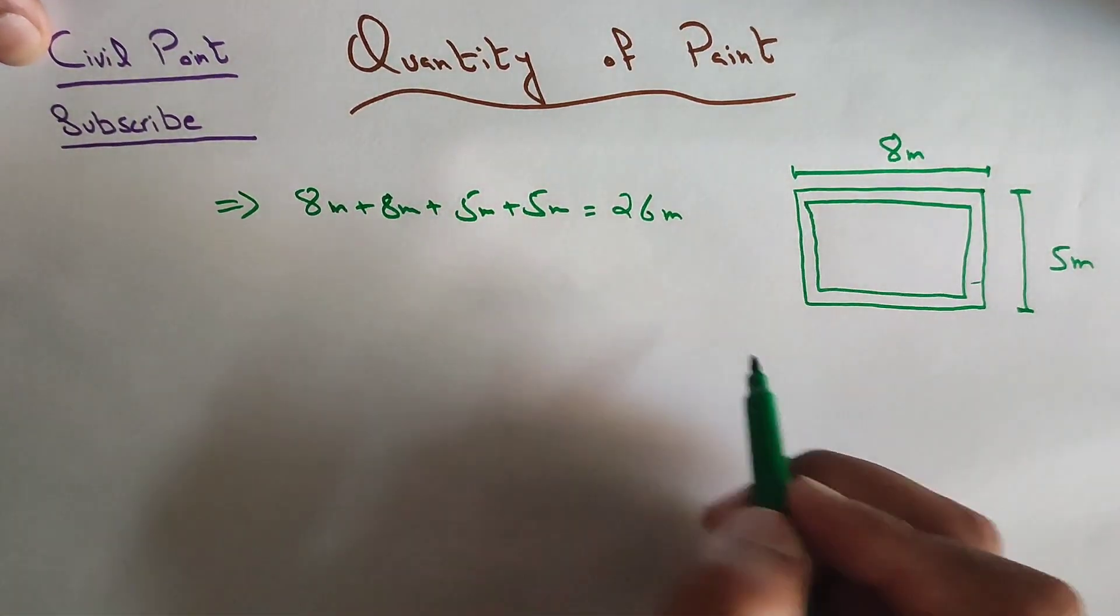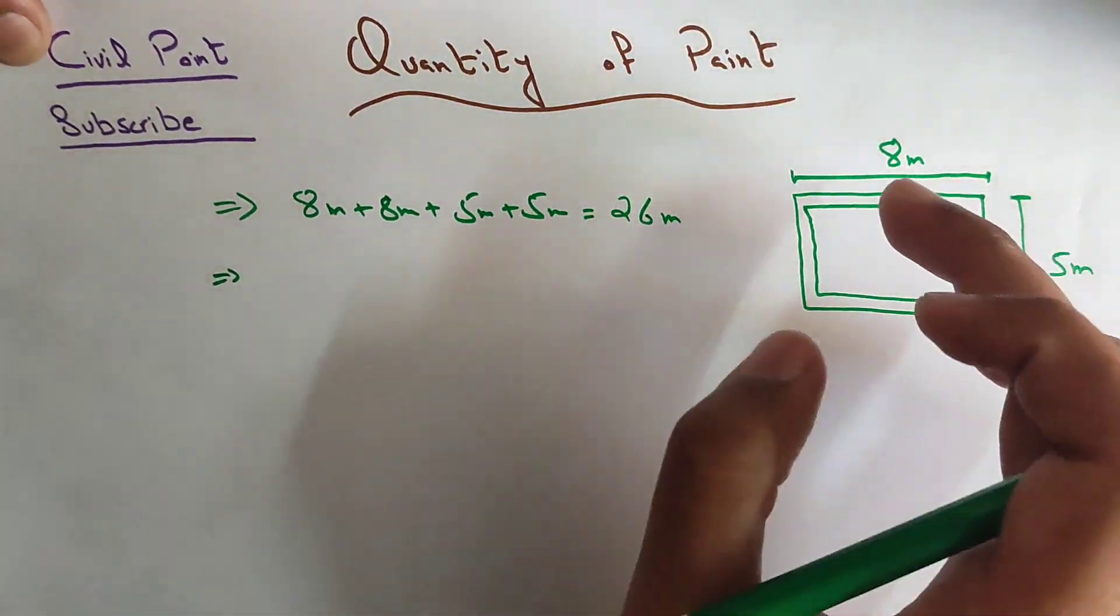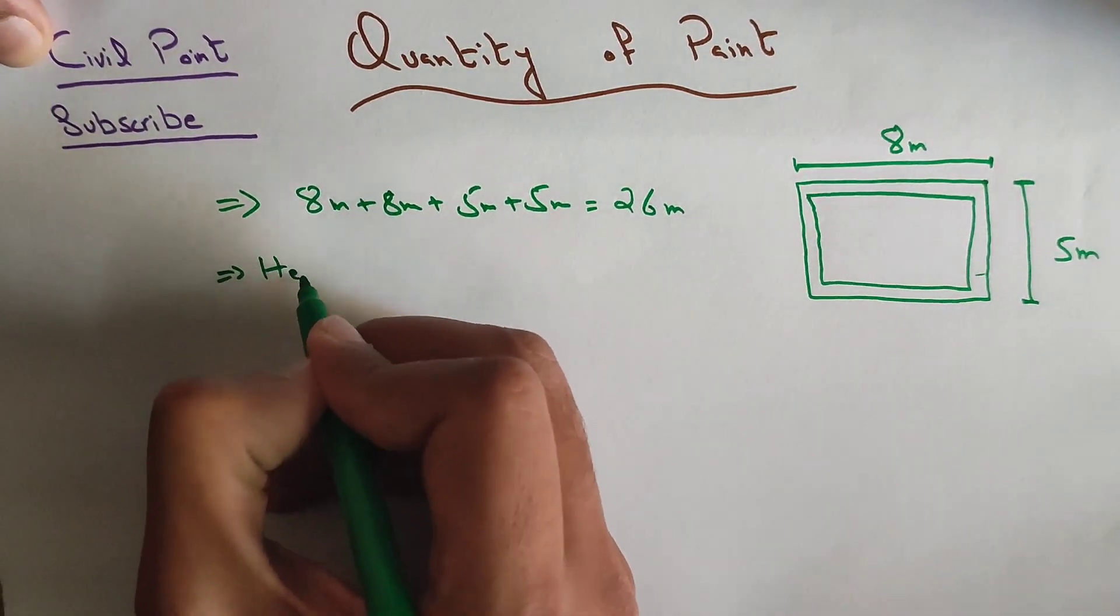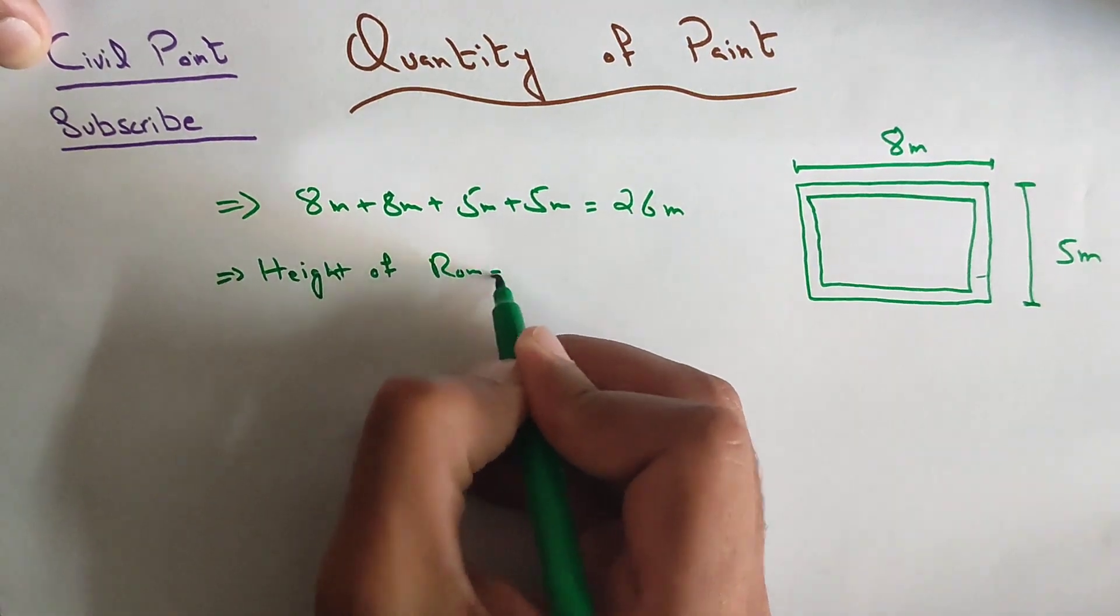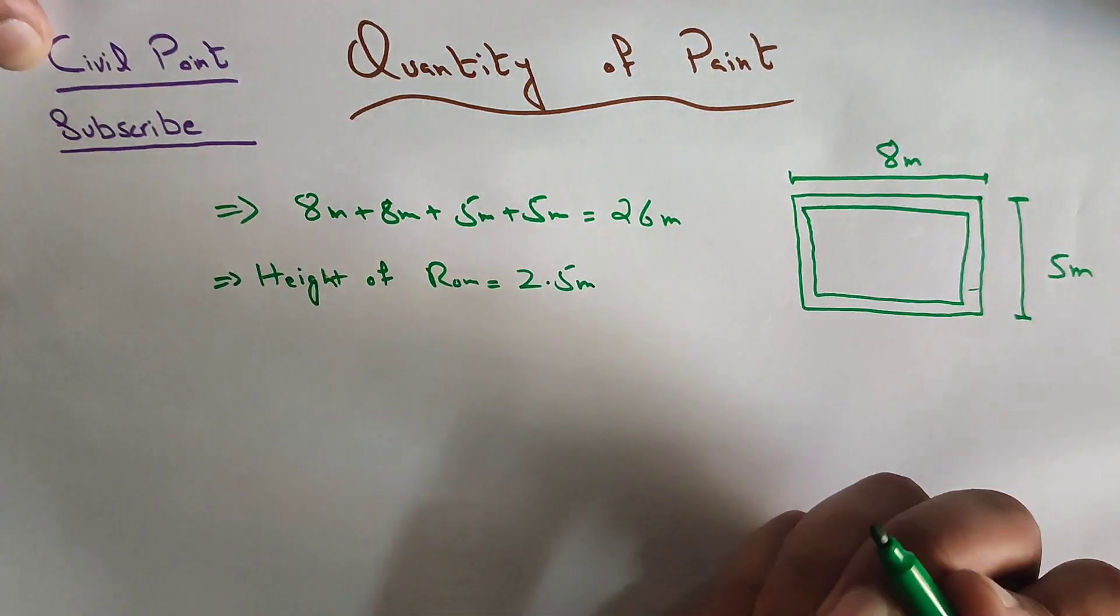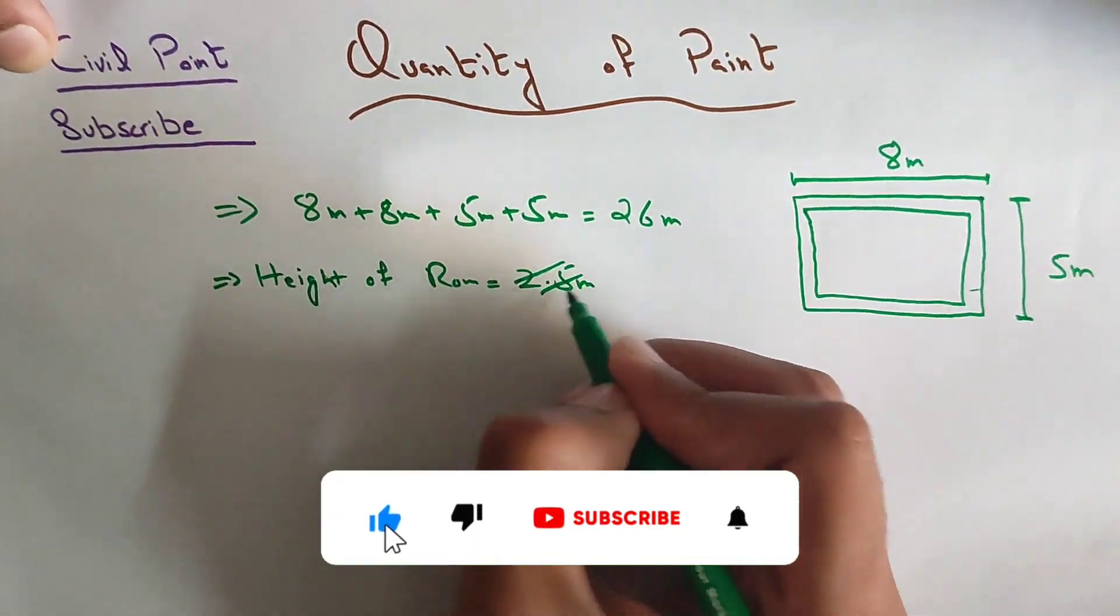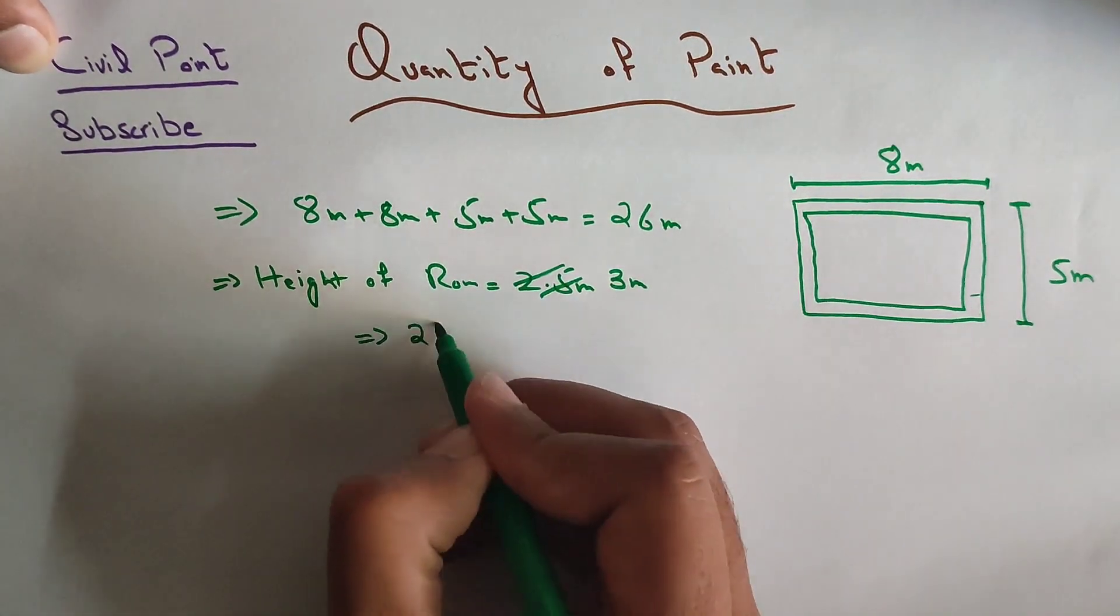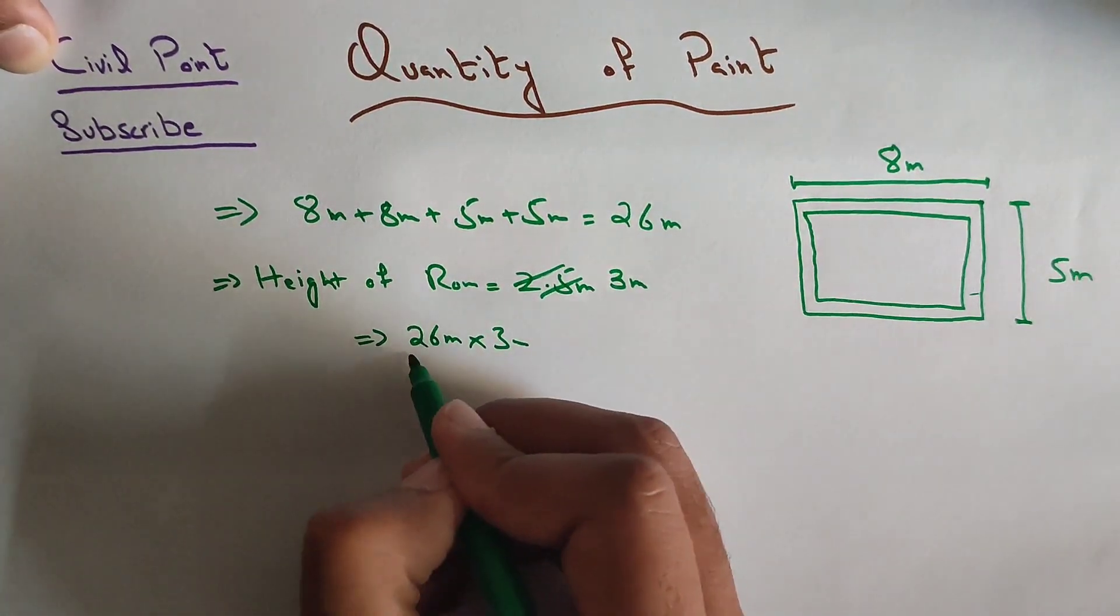Secondly, we will have to multiply this length by the height of the room. Let's suppose we have a height of room of 2.5 meters, or you can say 3 meters. So we will multiply 26 meters into 3 meters. It's the total length of the wall and total height.